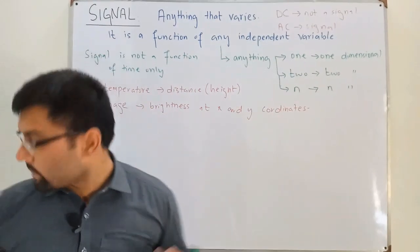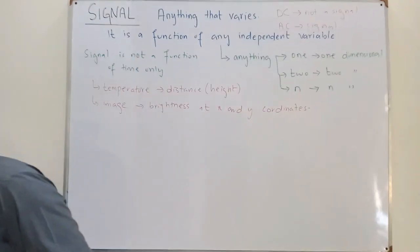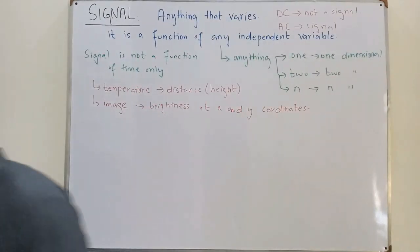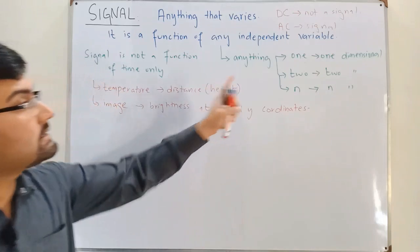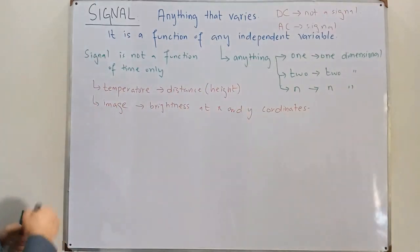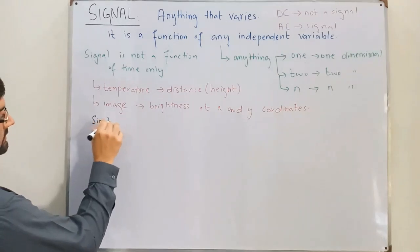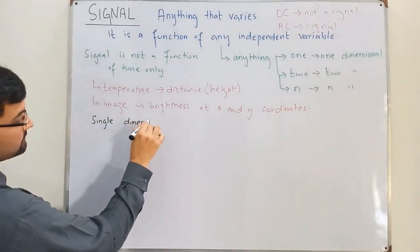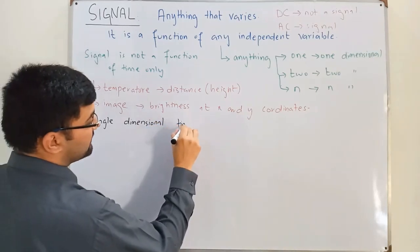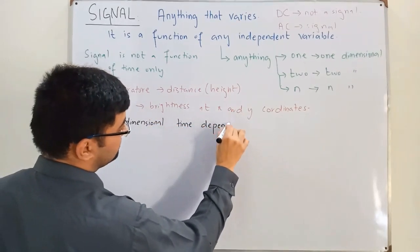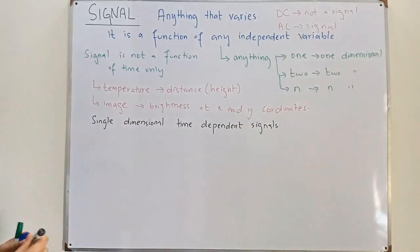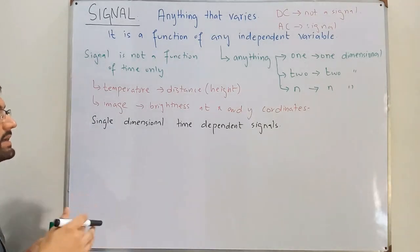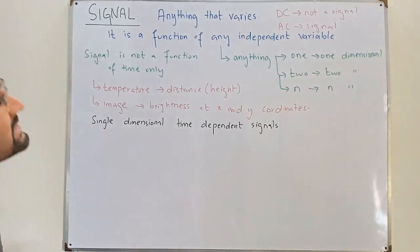In this particular course, we will be discussing single-dimensional, time-dependent signals. The independent variable will be time. Based on this time dependency, we have two important categories of signals which we see today.